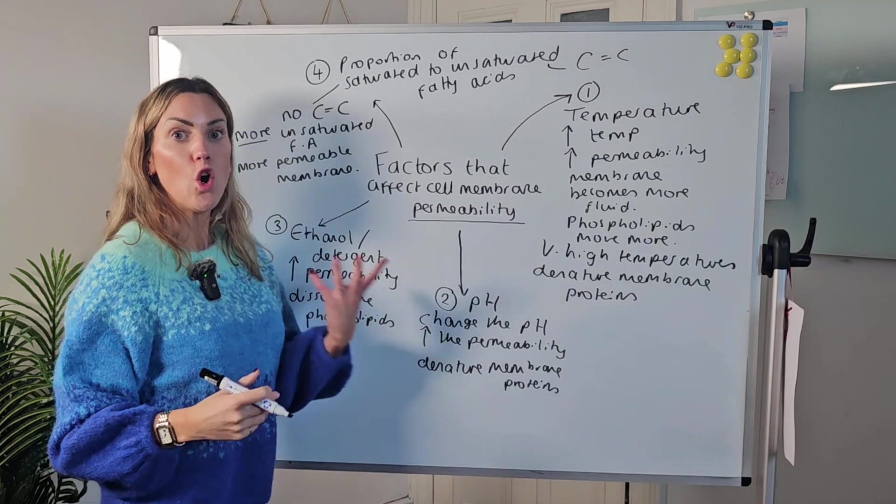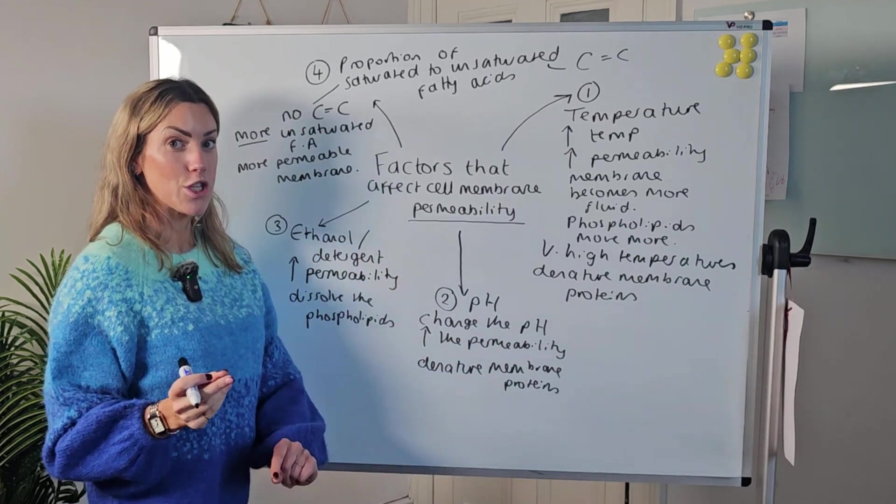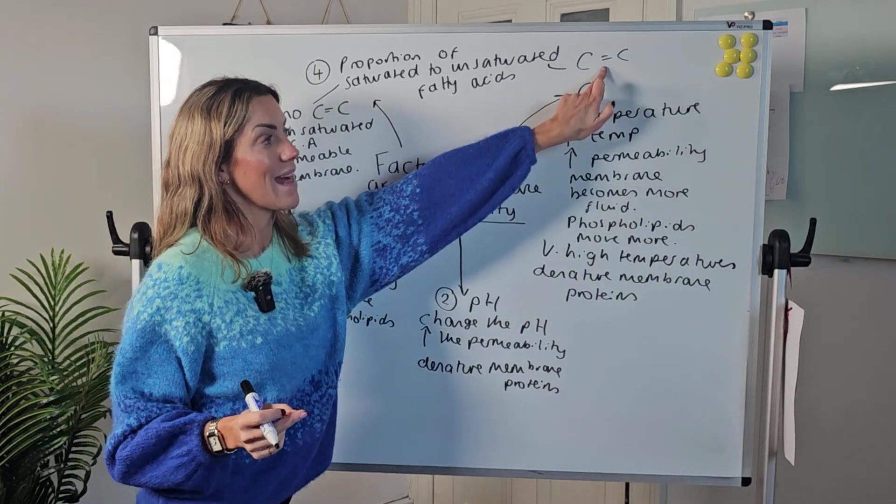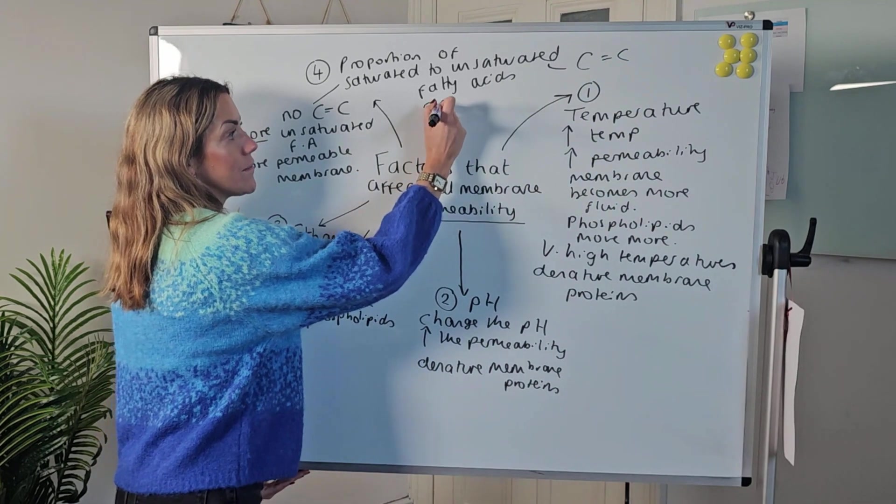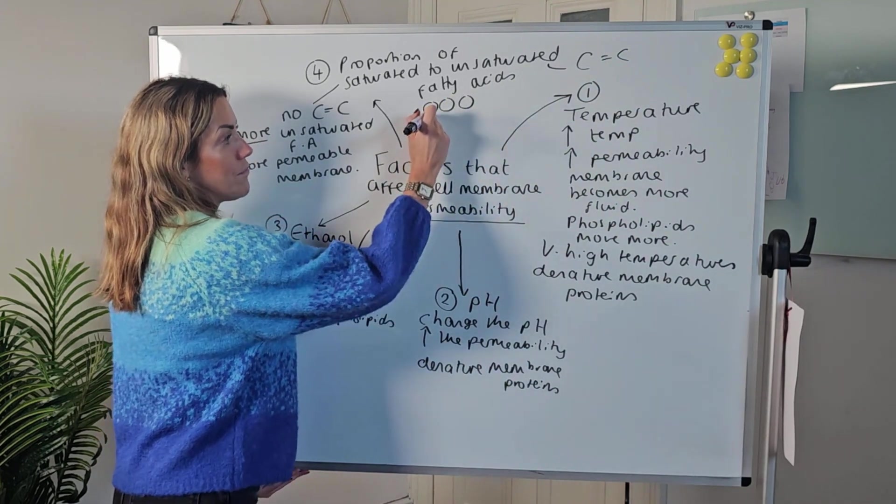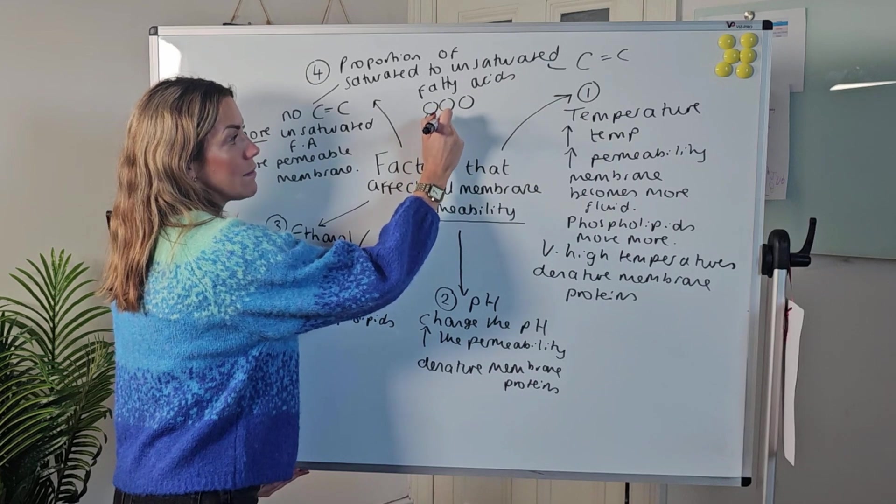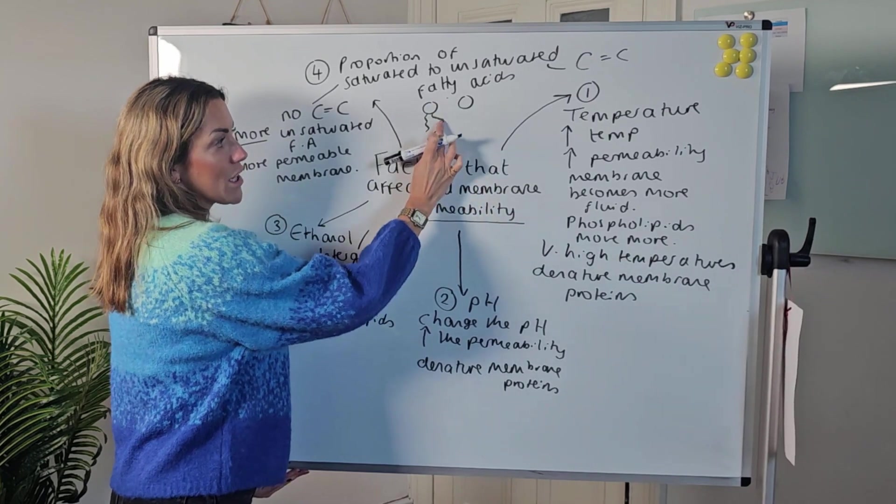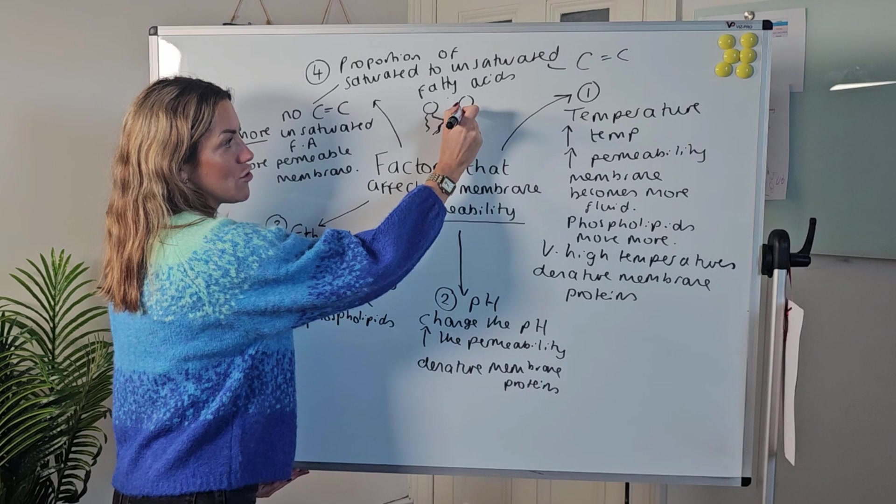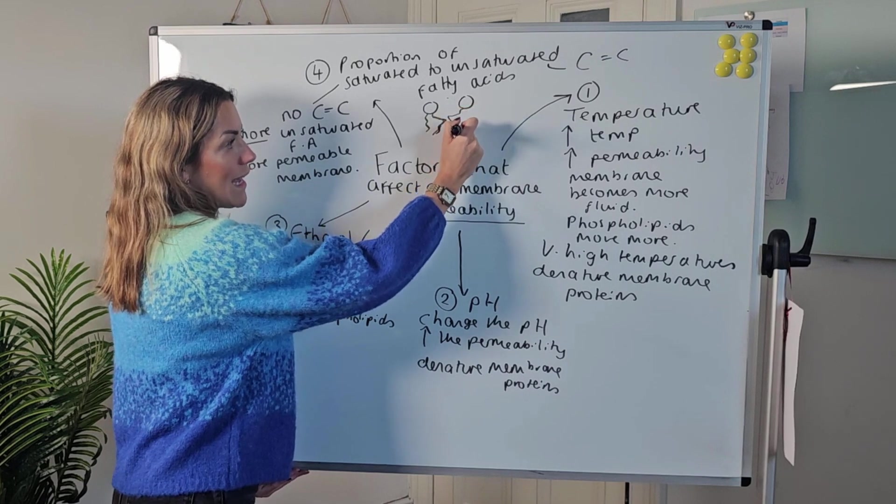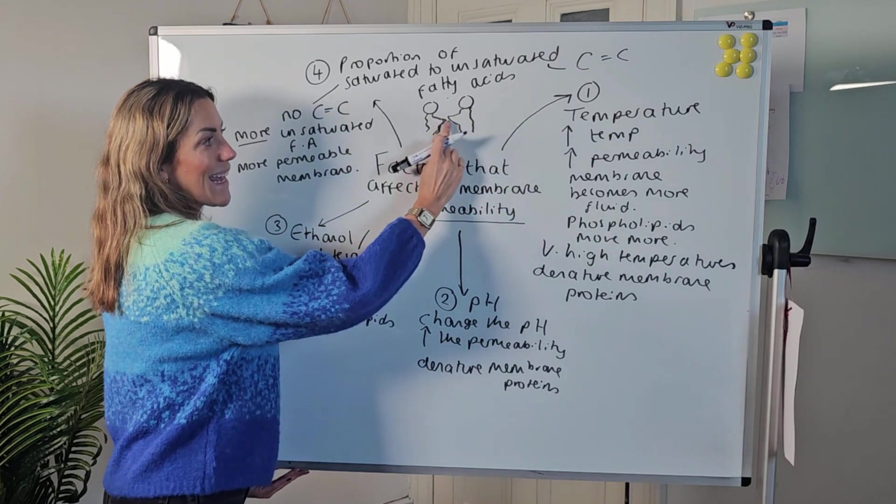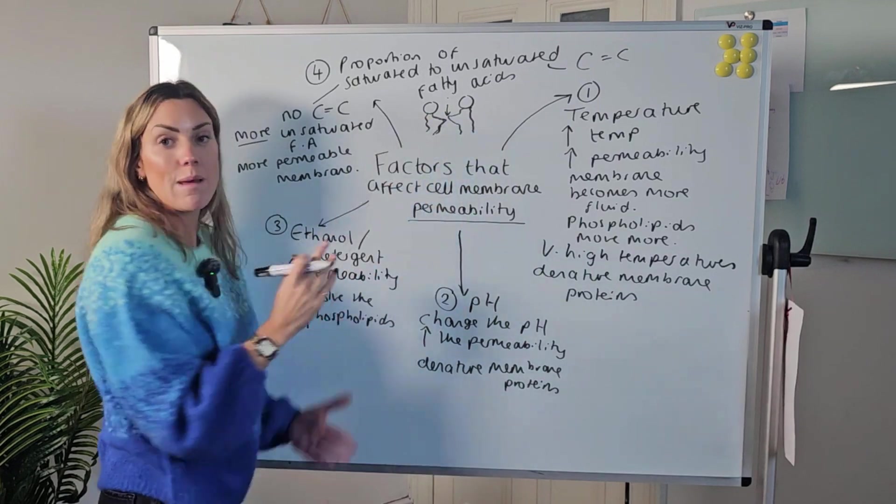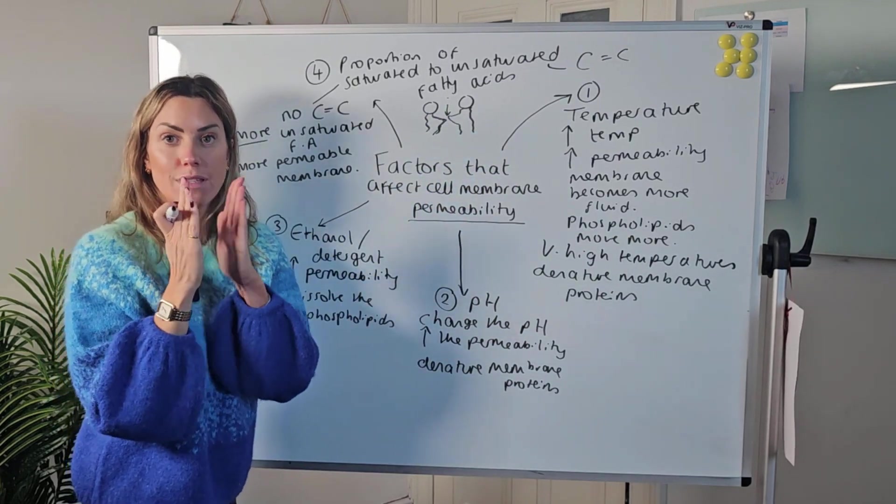More unsaturated compared to saturated will increase the permeability of the membrane, and that's because wherever you get these carbon-carbon double bonds, you get a kink in the fatty acid chain. And because you have a kink like that, the phospholipids cannot pack as closely together.